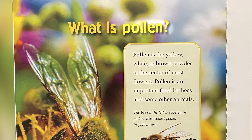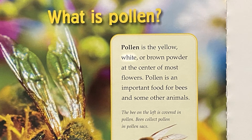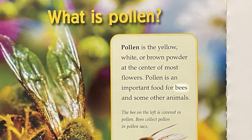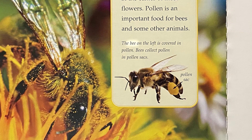What is Pollen? Pollen is the yellow, white, or brown powder at the center of most flowers. Pollen is an important food for bees and some other animals. The bee on the left is covered in pollen. Bees collect pollen in pollen sacks.